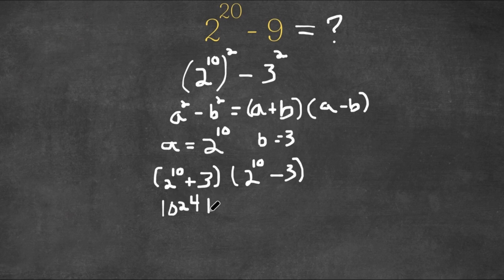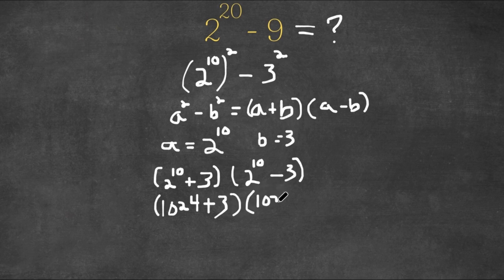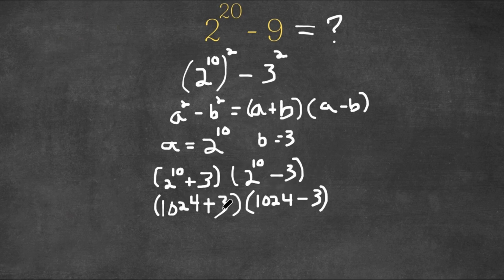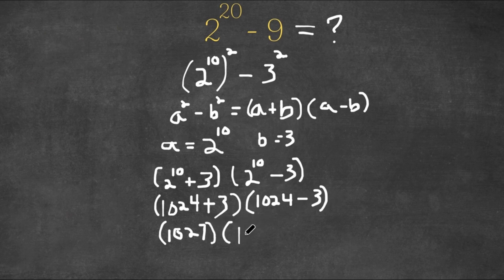So if we plug in a and b into the expression we get 2 to the power of 10 plus 3, in parentheses, times 2 to the power of 10 minus 3. Now 2 to the power of 10 is 1024, so we have 1024 plus 3 times 1024 minus 3. Now 1024 plus 3 is 1027 and 1024 minus 3 is 1021.